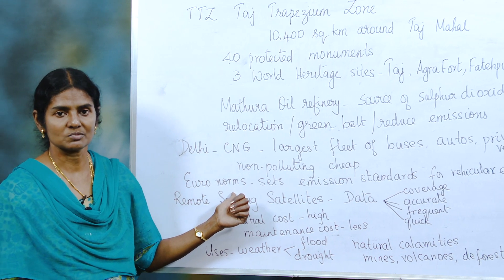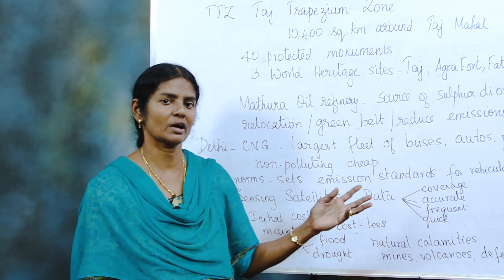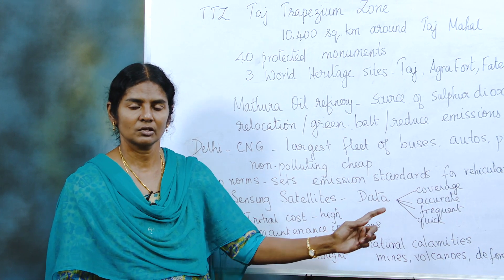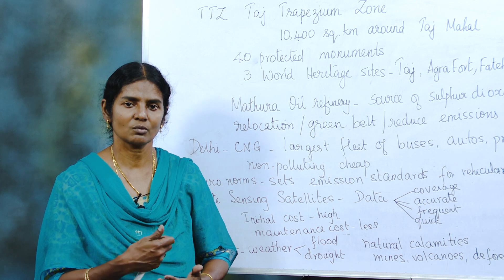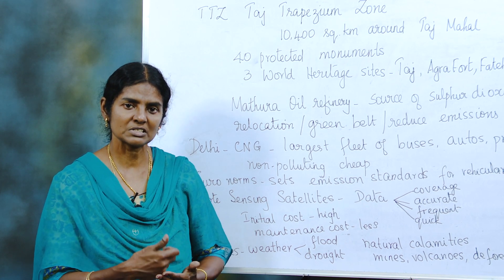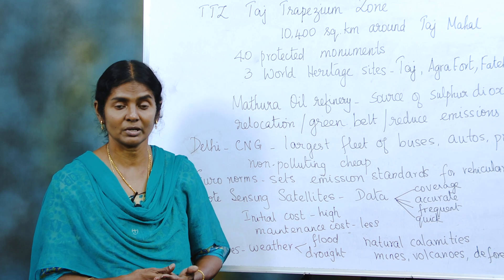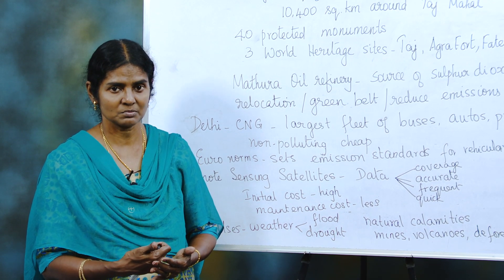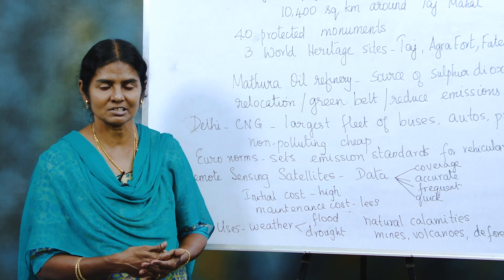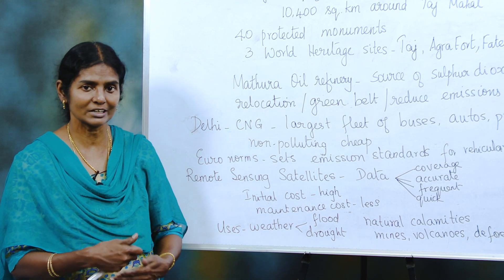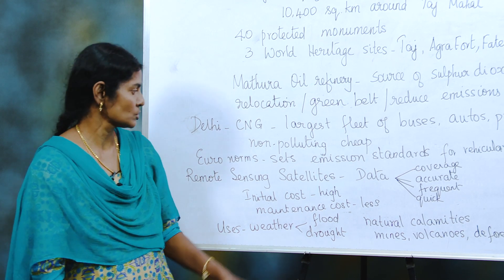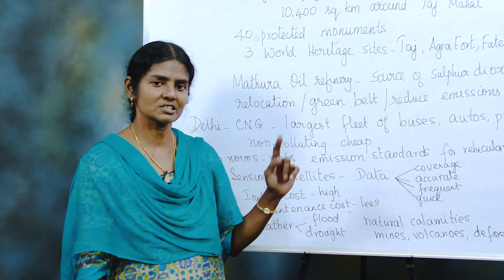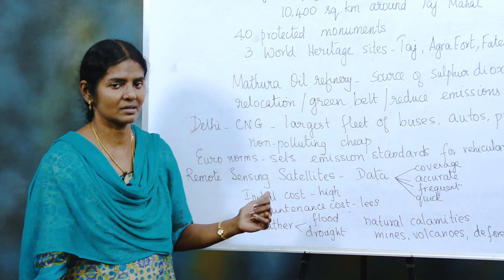Then we come to Euro norms — Euro 1, 2, 3. These are only to set emission standards. When you get an emission certificate once in six months, it shows the percentage of gases emitted by your vehicle. If emissions go beyond the permissible limit, you cannot get the certificate or clearance. So emission standards are set by Euro norms. In India, these are replaced or renamed as Bharat norms.